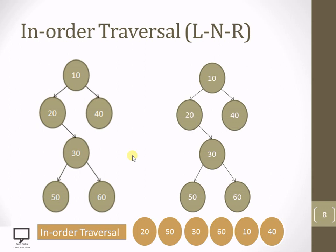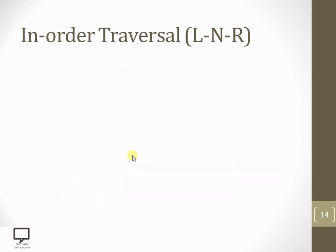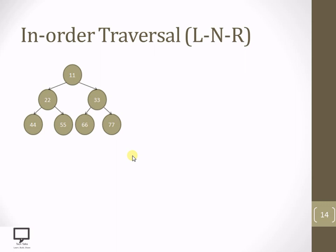Now let's move forward to the third solved example with steps left, root, and right. I have given a complete binary tree as an example. You can pause this video and try to solve it by yourself. If you are confident about the steps of in-order traversal, pause, traverse the tree, and then resume to check whether your answer is correct.